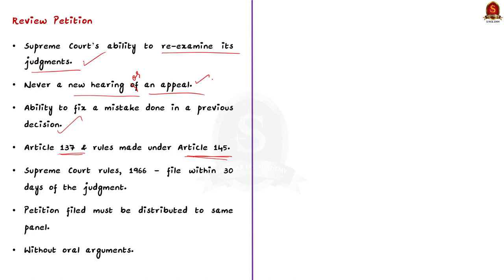There is no legal provision which necessitates the approval of a review petition by the Supreme Court. A review petition must be filed within 30 days of the pronouncement of the judgment or order by the Supreme Court, as per the Supreme Court Rules 1966. The review petition filed must be distributed to the same panel that gave the verdict.